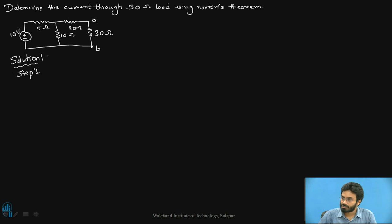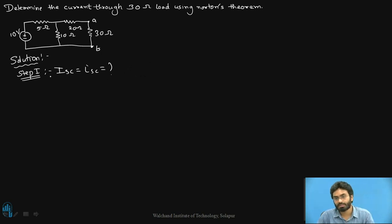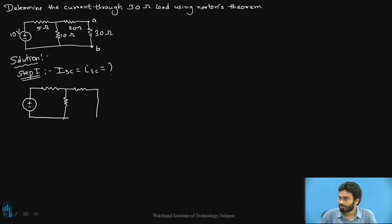We basically have three steps. In step one, let us identify the value of Isc. For this, we have to first disconnect the load — which is similar to the Thevenin's theorem approach — and then redraw the diagram and short circuit the terminals A and B by replacing the load of 30 ohms. The current flowing through the short circuit is going to be the short circuit current Isc.